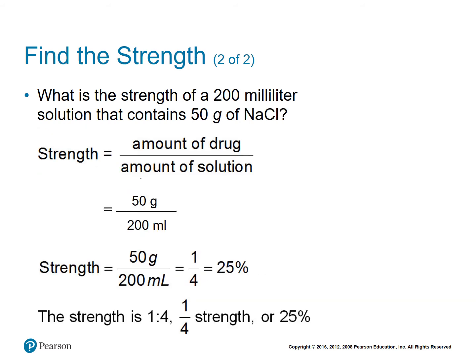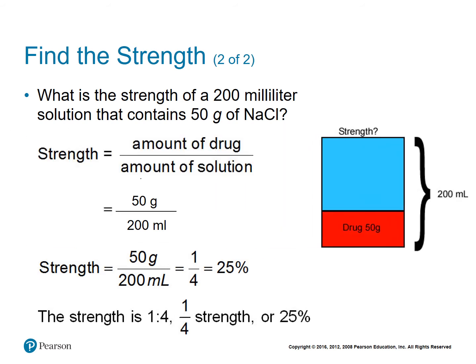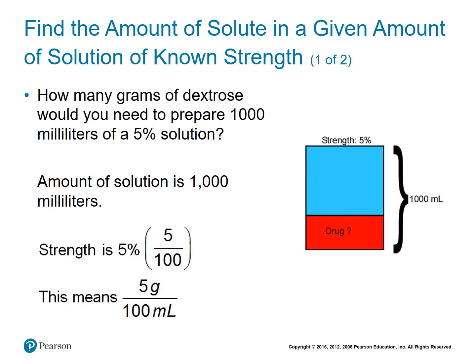In this example, we want to find the strength of 200 milliliters of solution that contains 50 grams of sodium chloride. Using the same setup, the amount of the drug is 50 grams divided by the amount of solution, which is 200 milliliters. We simplify: 50 divided by 50 is 1, and 200 divided by 50 is 4 — giving us one-fourth, or 25%, as our strength. You can write the strength as one to four, one-fourth, or 25%.